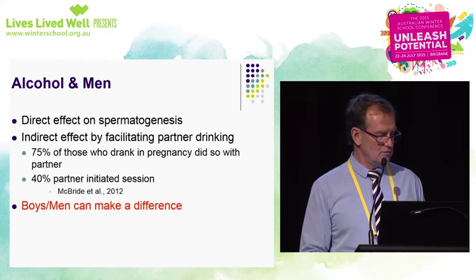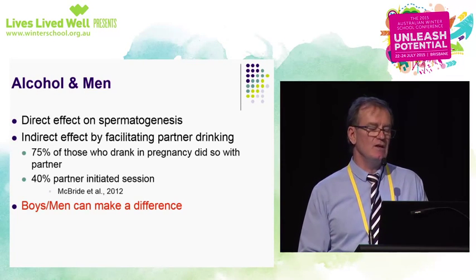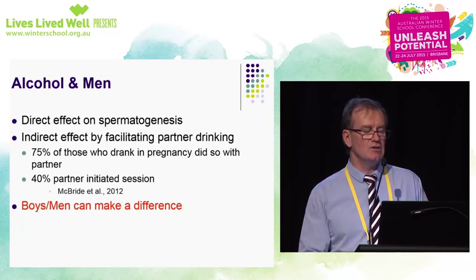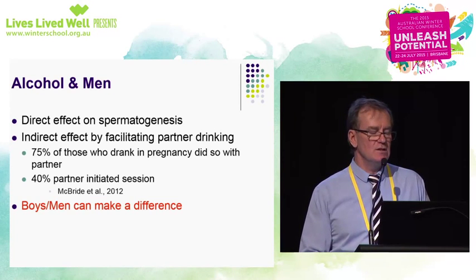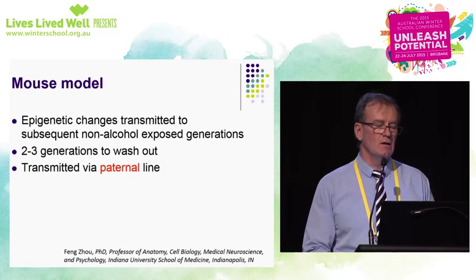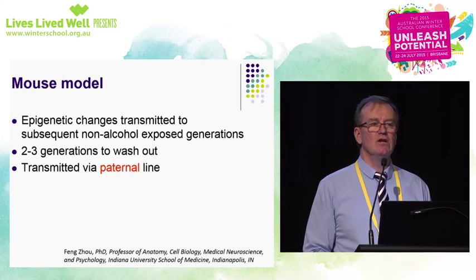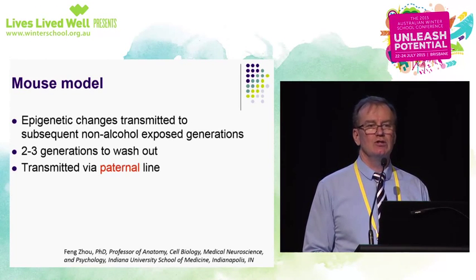Alcohol and men. There is a direct effect of alcohol on spermatogenesis and an indirect effect by the partner facilitating the other person's drinking. 75% of those who drank in pregnancy did so with a partner, and on 40% of occasions it was initiated by men. The overwhelming moral of that story is that boys and men can make a very significant difference and should be included in any education and intervention around FASD. The mouse model shows that epigenetic changes are transmitted through the male line and take two to three generations to wash out — meaning that if my grandfather was exposed to alcohol in utero, I could still be affected by that exposure passed down epigenetically.